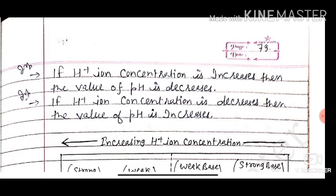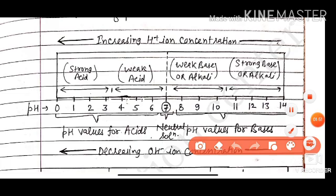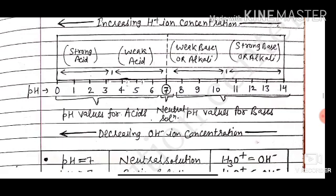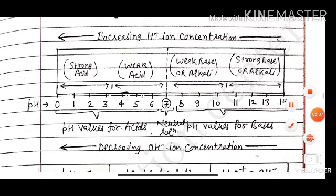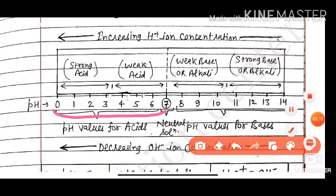Looking at the scale from left to right, H-ion concentration increases. On the pH scale, 0 to 7 are acidic in nature, 8 to 14 are basic in nature, and 7 is neutral. More specifically, 0 to approximately 3 are strong acids, 3.5 to 6 are weak acids, 7 to 10.5 are weak bases, and above 10.5 are strong bases or strong alkalis.